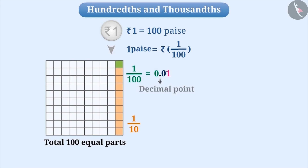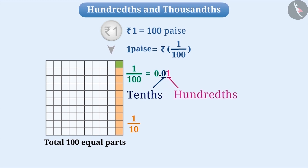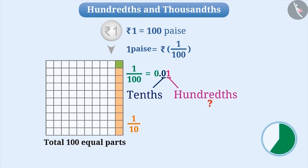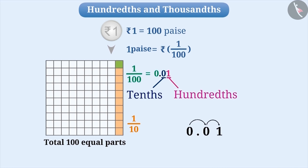The first place to the right of the decimal point is tenths and the second place to the right is hundredths. The tenth part of a whole number is one tenth. Similarly, a tenth part of one tenth is one hundredth. As we move from left to right, the value of each place is one-tenth of its previous place.